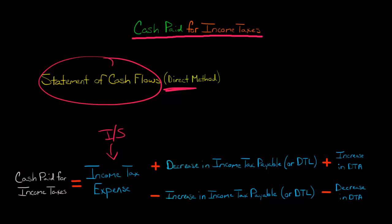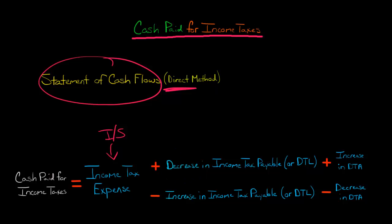Now, there's a thing called a deferred tax liability that's typically recognized — for example, because you use accelerated depreciation for tax purposes but maybe straight line for financial reporting purposes. So you have this thing called a deferred tax liability, and if there's a decrease in a deferred tax liability, that is also going to get added to income tax expense.